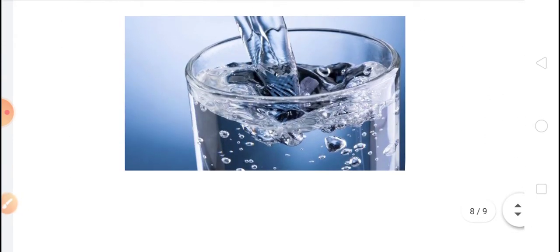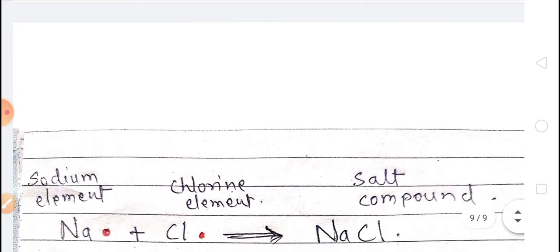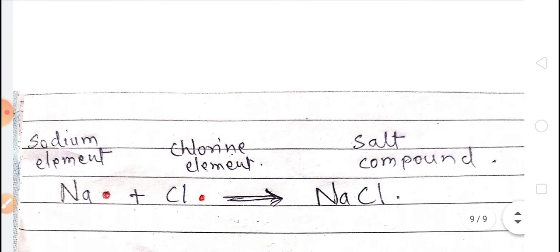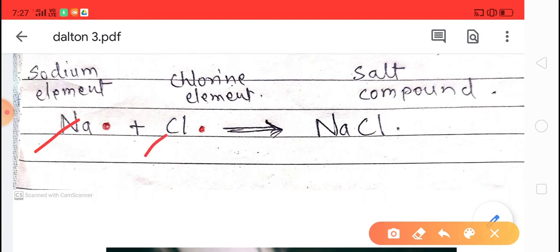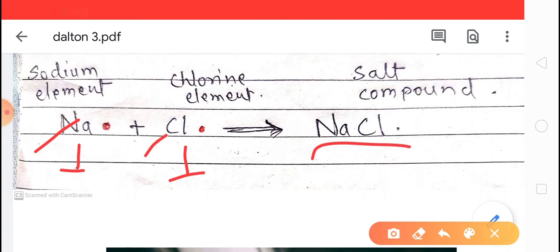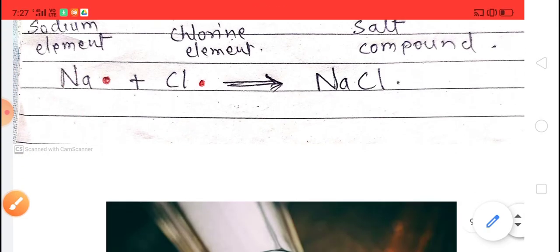You can see one more example — sodium chloride, the salt we use in our food. Sodium is one element and chlorine is another element. One atom of sodium combines with one atom of chlorine. Both are poisonous substances on their own, but when they combine together, we get sodium chloride — table salt — which we add to our food while cooking every day.